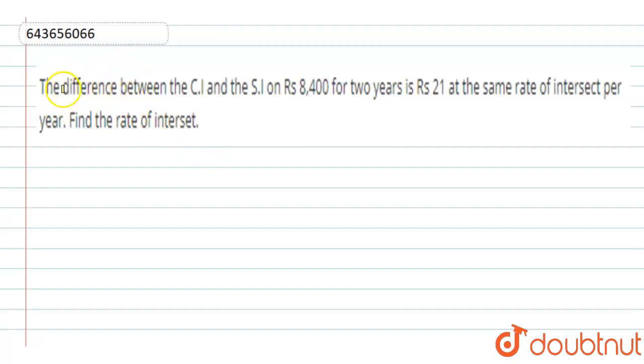Hello everyone, our question is: the difference between the CI and SI on rupees 8400 for two years is rupees 21 at the same rate of interest per year. Find the rate of interest.